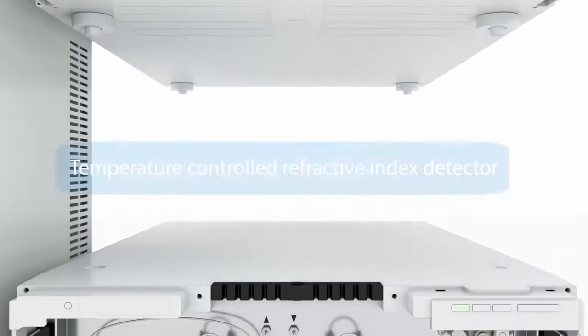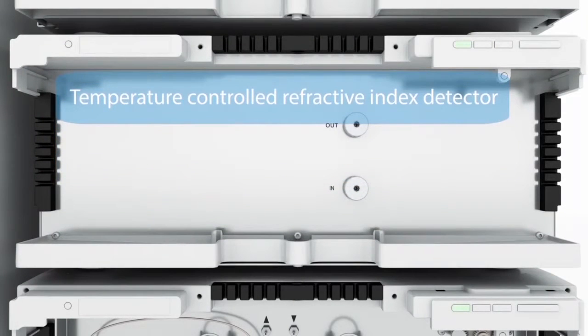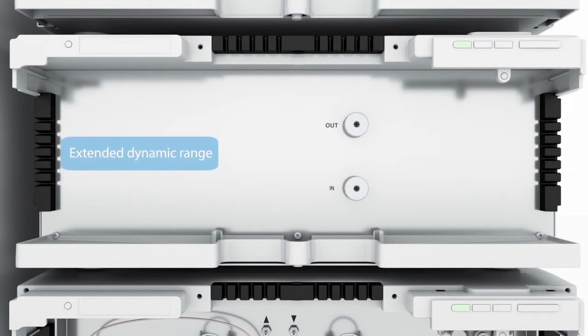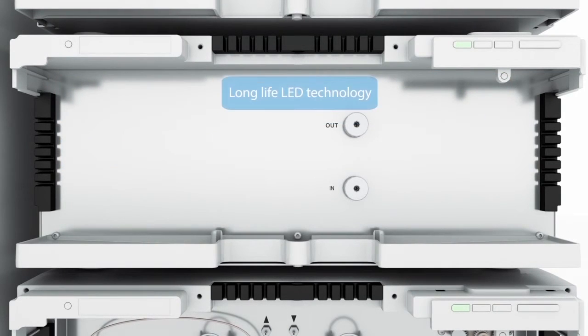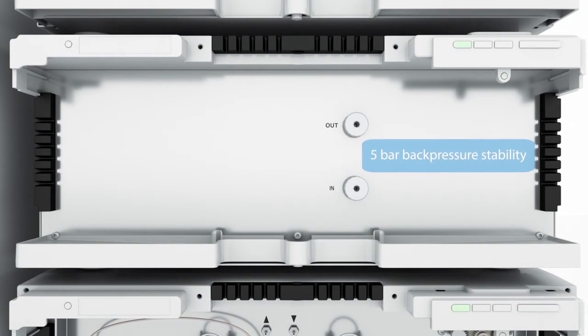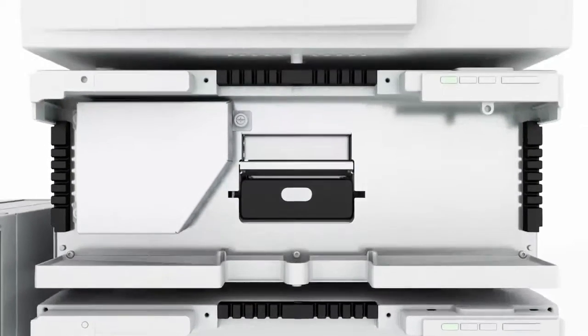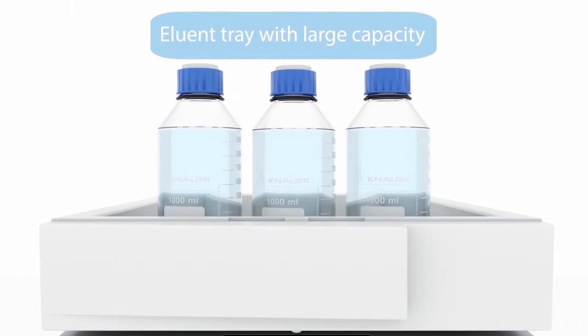The Azura Refractive Index Detector RID 2.1L is ideal for fast and reliable routine analysis of non-UV absorbing substances. It offers a remarkably wide dynamic range. The intelligent temperature control guarantees fast baseline stabilization and stable operation.